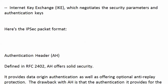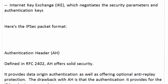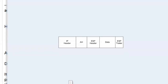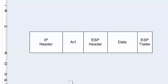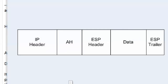Here is the IPsec packet format. Notice that when we've got AH, we've got a header but we don't have a trailer. With ESP, we've got that header and trailer around the data — which is encapsulation.